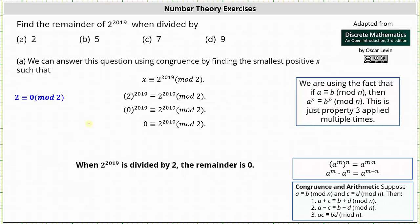I do want to mention we are using the fact that if a is congruent to b mod n, then a to the power of p is congruent to b to the power of p mod n. This is property 3 under congruence in arithmetic, used multiple times.